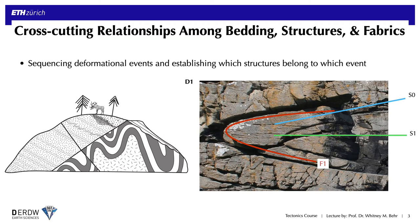The image on the right, for example, shows folded bedding labeled with the blue line as S0. The folds represent a deformation event that occurred after deposition, labeled in red as F1. Additionally, those F1 folds are associated with a new planar deformation fabric known as an axial plane cleavage, labeled here with the green line as S1. Altogether, we would collect these structures into a deformational event labeled D1, and we can try to track down the tectonic forces that produced this suite of structures if they're observed at a regional scale.